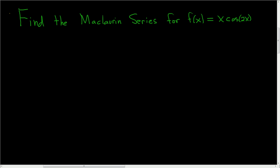Find the Maclaurin series for f(x) = x·cos(2x). We'll start by writing down the Maclaurin series for cosine x. Cosine x equals the infinite sum, as n runs from 0 to infinity, of (-1)^n times x^(2n), divided by (2n)!.